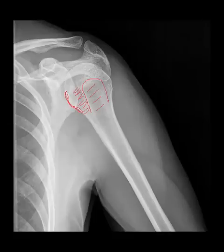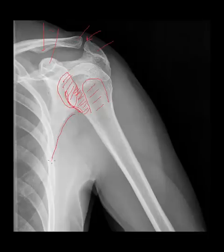This is the acromion process, here is the clavicle, acromioclavicular joint, conoid tubercle, coracoid process, glenoid fossa, axillary or lateral border of the scapula, inferior angle of the scapula, ribs, lung tissue, axilla, and deltoid musculature.